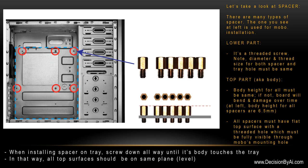Let's take a look at the spacer itself. There are many types of spacers. The one on the left is used for motherboard installation. The lower part looks like a threaded screw. Note: the diameter and thread size for both the spacer and the tray hole must be the same. The top part, known as the body, must have the same height for all spacers — if not, the board will bend and be damaged over time. Here, the body height for all spacers is 6.5 mm. All spacers must have a flat top surface with a threaded hole, which must be fully visible through the motherboard's mounting hole — this is very important so that you can install a screw. When installing a spacer on the tray, screw it down all the way until its body touches the tray, so that all top surfaces are on the same level.